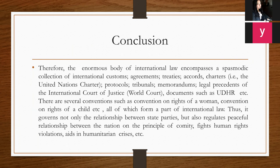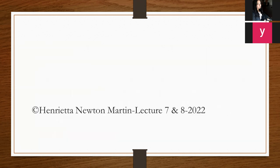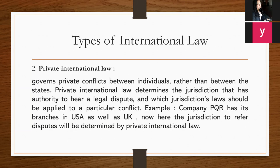You also have the International Criminal Court. Documents such as the UDHR — Universal Declaration of Human Rights, 1948 — and several conventions such as the Convention on Rights of a Woman, Convention on Rights of a Child, and the Convention on Elimination of All Forms of Discrimination all form a part of international law. Thus it governs not only the relationship between state parties but also regulates peaceful relationships between nations on the principle of comity and unity, and fights human rights violations and aids in humanitarian crises.